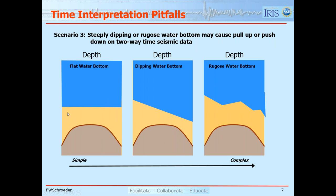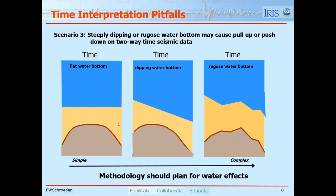Here are three examples. A flat water bottom, a water bottom dipping left to right, and a rugose or rough water bottom — keeping the subsurface structure the same. These are three depth sections showing three conditions of the water bottom. Converting to time using representative velocities, the red is the true depth structure and the brown is the time structure. Where the water bottom is flat, we get no distortion. With a dipping water bottom, the time and depth structures don't totally match. With a rugose water bottom, undulations on the water bottom appear as false time structure.